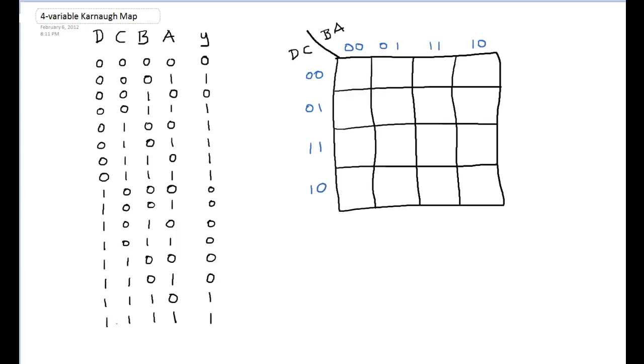Now, the next thing we're going to do, again, is just map out or transfer the information from the truth table into the Karnaugh map, and it's going to work the same way it did last time. So, for example, the first line of the truth table right here, 0, 0, 0, 0, will correspond to box 0, 0, 0, 0 in the Karnaugh map right here.